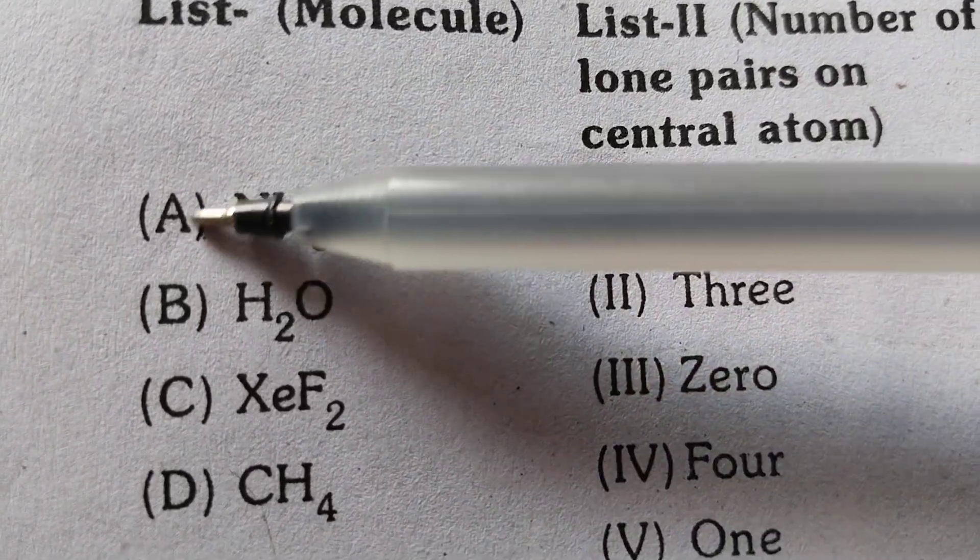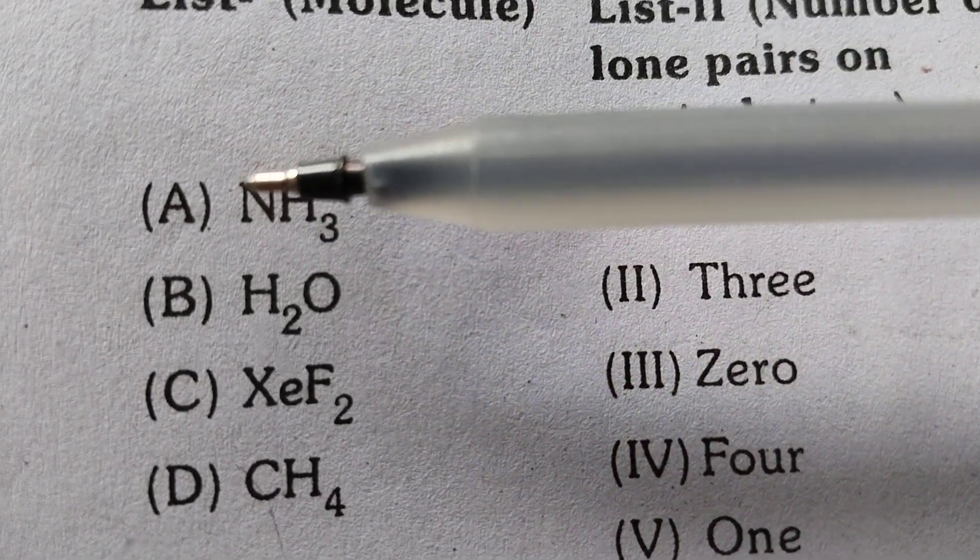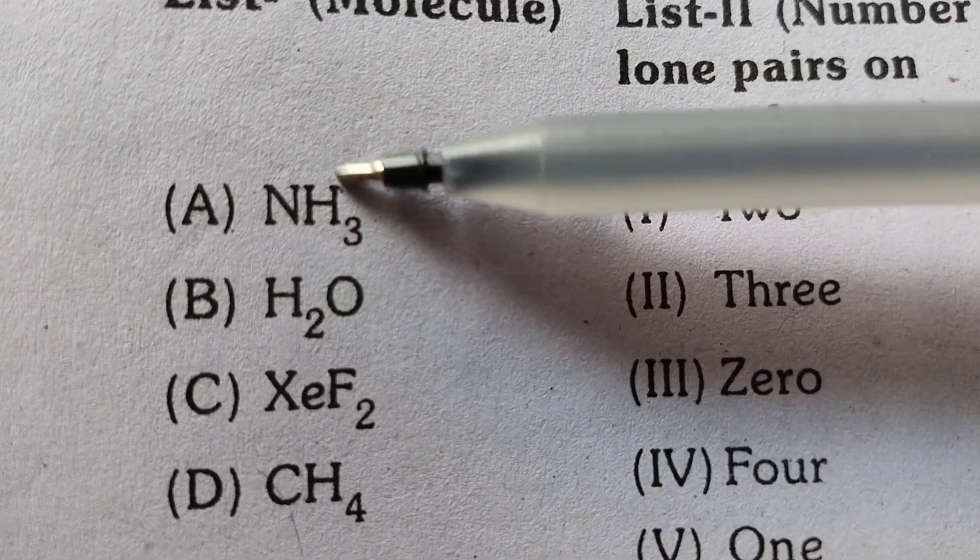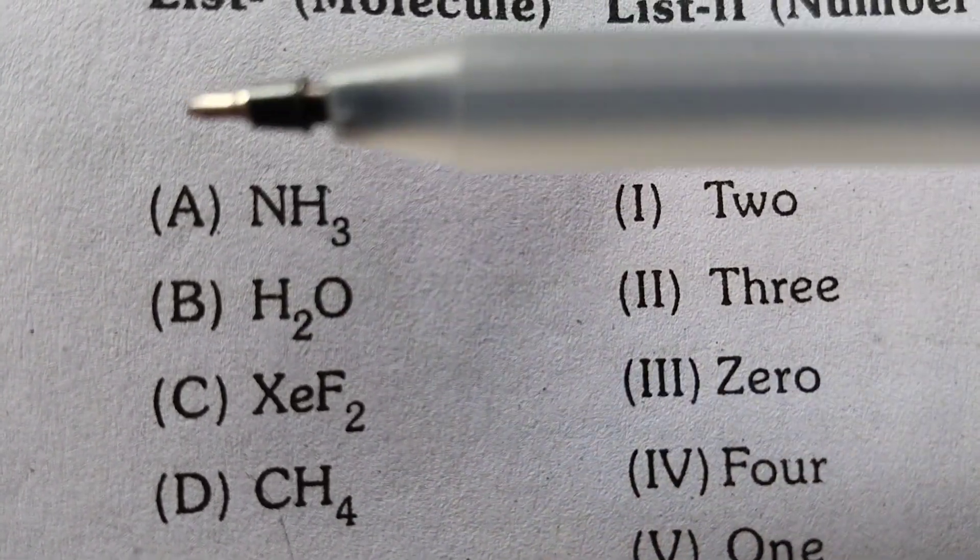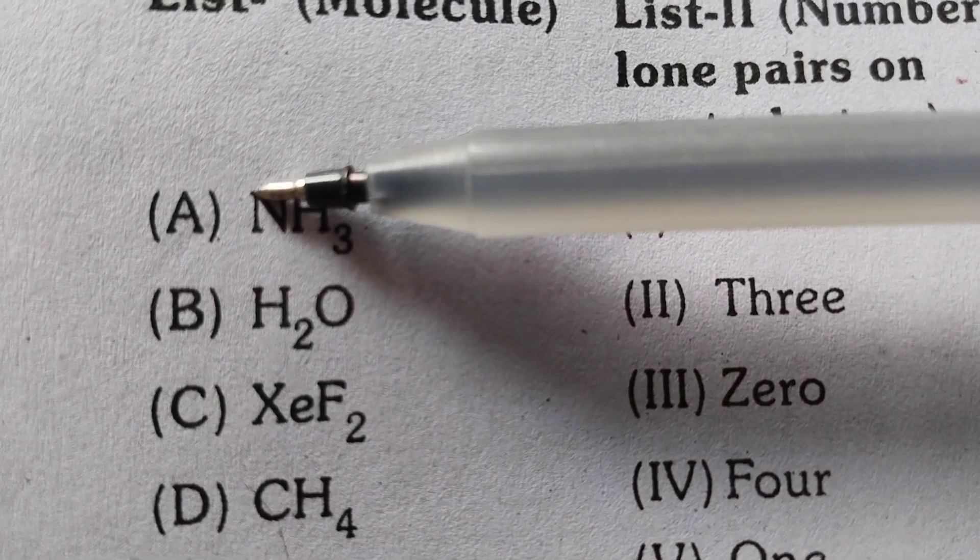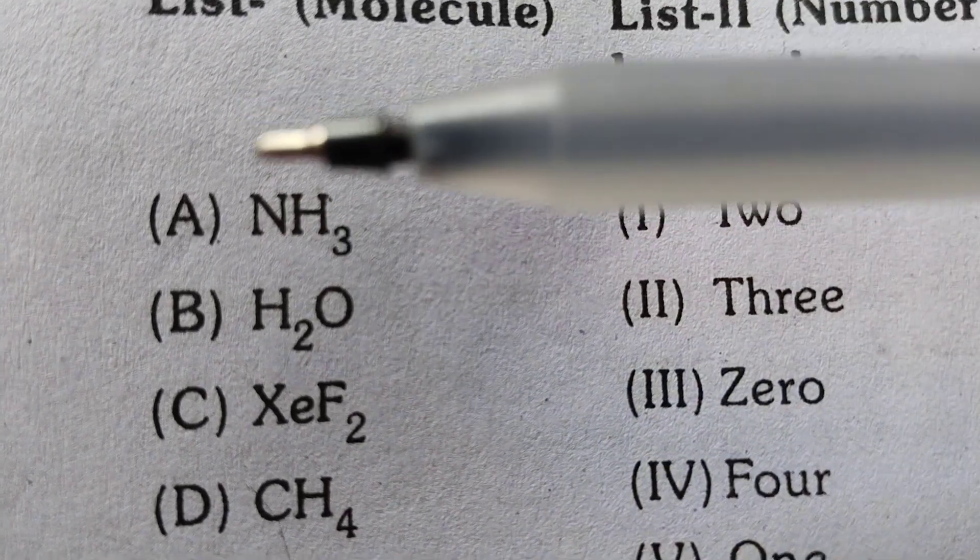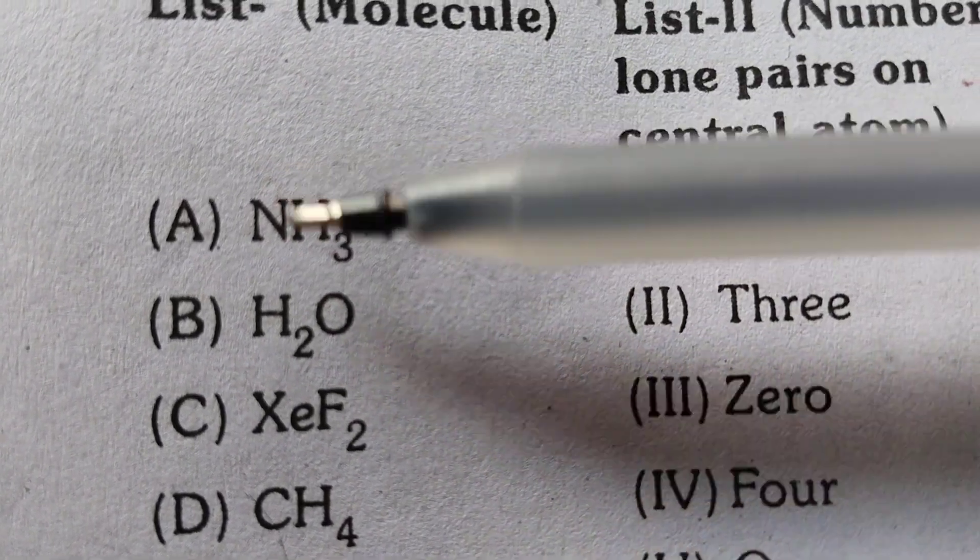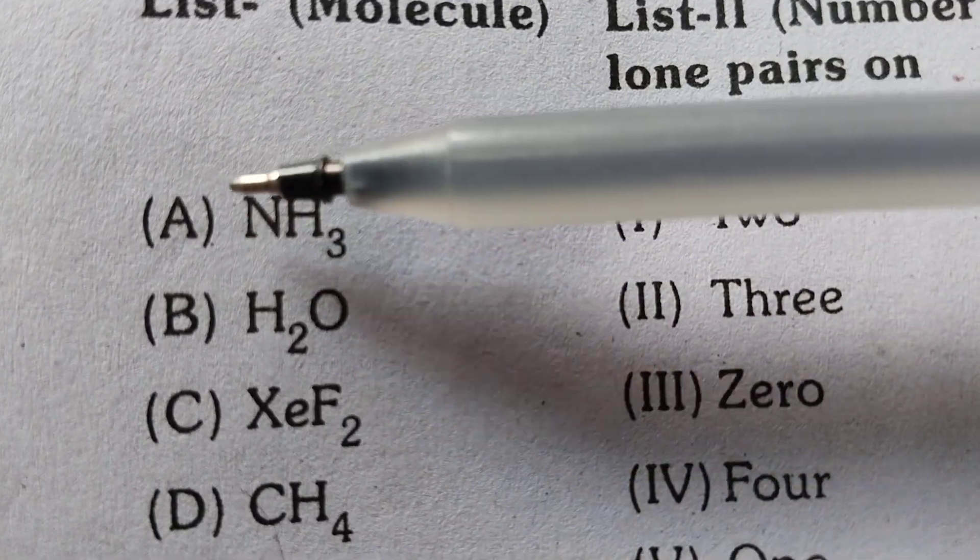Ammonia, everybody knows. Ammonia possesses only one lone pair. Nitrogen in the ammonia possesses only one lone pair. The bond angle is reduced from 109 degrees 28 minutes to 107 degrees due to VSEPR theory. So, ammonia possesses only one lone pair.